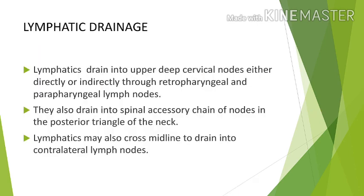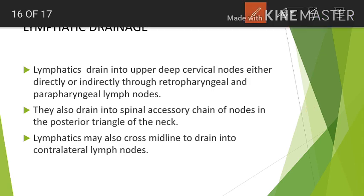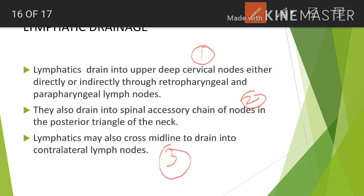Regarding lymphatic drainage of the nasopharynx: first, lymphatics drain into the upper deep cervical nodes, either directly or indirectly through the retropharyngeal and parapharyngeal lymph nodes. Second, they drain into the spinal accessory chain of nodes in the posterior triangle of the neck. Third, these lymphatics may cross the midline and drain into the contralateral lymph nodes.